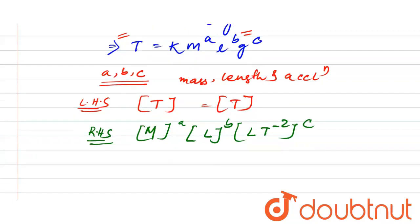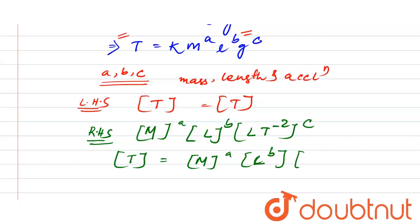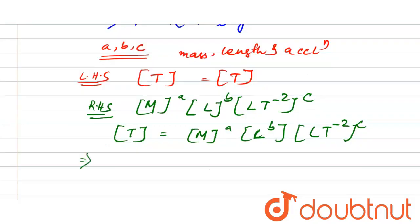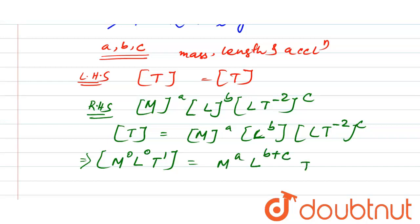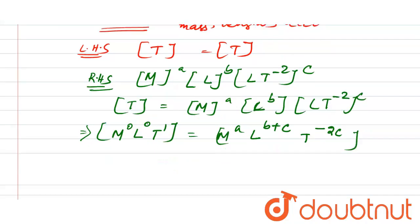From LHS equal to RHS we can write [T] = M^a · L^b · (L·T^(-2))^c. Expanding, this gives M^0 · L^0 · T^1 = M^a · L^(b+c) · T^(-2c).